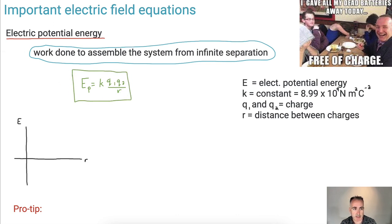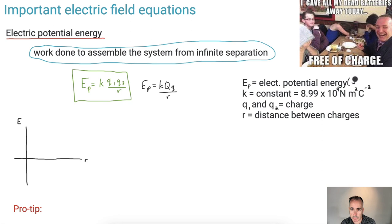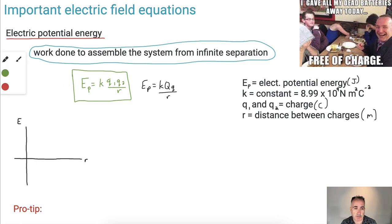I like to use a different version — K times big Q times little Q over R. Now let's look at the units. EP, which should have a subscript P, is electric potential energy, measured in joules. K is a constant you can look up. Q1 and Q2 are charges in coulombs. R is the distance between them in meters. From the equation, E is proportional to the product of the charges and inversely proportional to R.